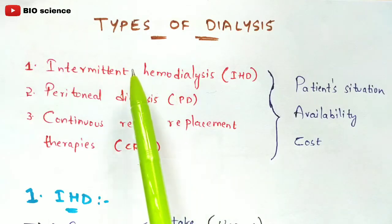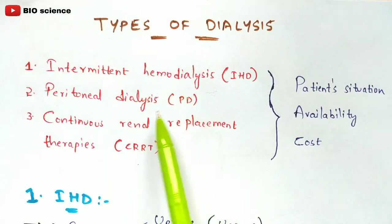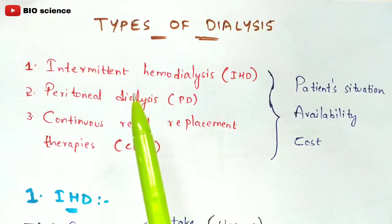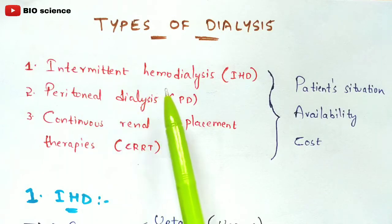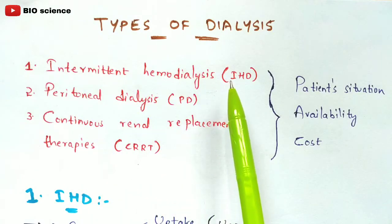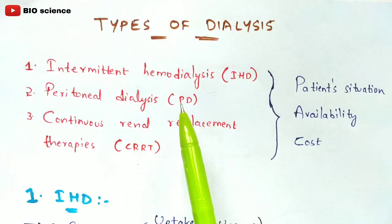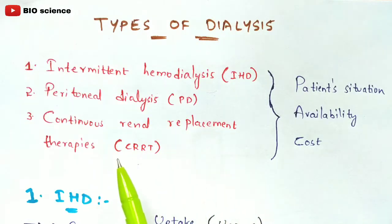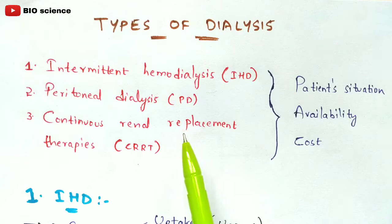There are many types of dialysis, but three are the most widely used in hospitals. Those three types are: Intermittent Hemodialysis (IHD), Peritoneal Dialysis (PD), and Continuous Renal Replacement Therapy (CRRT).